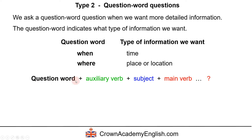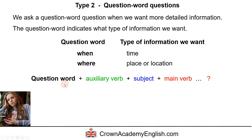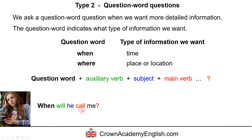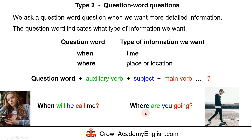'When will he call me?' — 'when' is the question word asking about time; 'will' is the auxiliary verb in the future simple; 'he' is the subject; 'call' is the main verb — and of course we have the question mark at the end. 'Where are you going?' — we're asking for information about place or destination. 'Are' is the auxiliary verb, 'you' is the subject, 'going' is the main verb, and the tense is the present continuous.